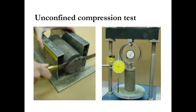Generally, the specimen size for the unconfined compression test requires the height of the sample to be twice the diameter — that is, the height-to-diameter ratio is 2. The soil sample is collected from a Shelby tube, then trimmed to have straight edges, and then placed in the unconfined compressive test device.